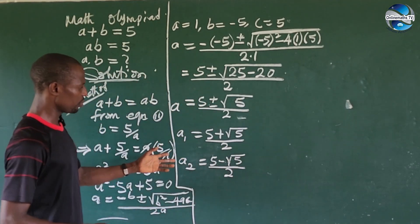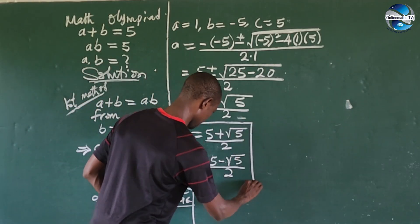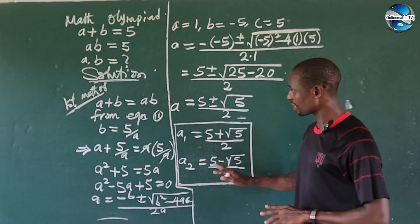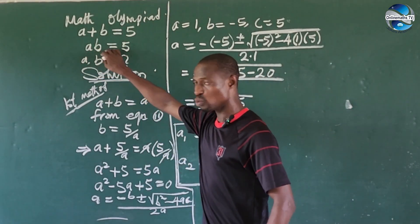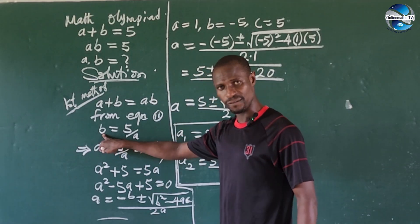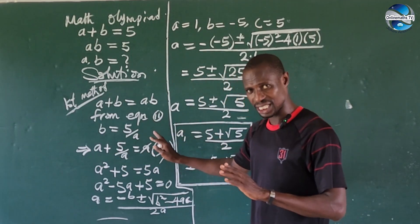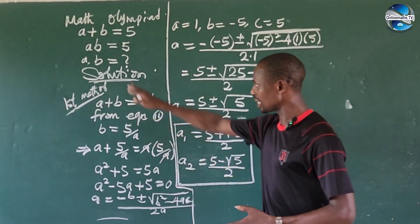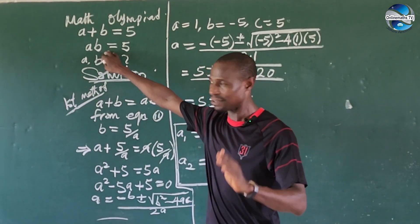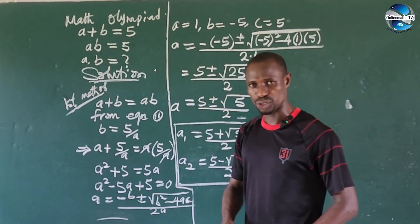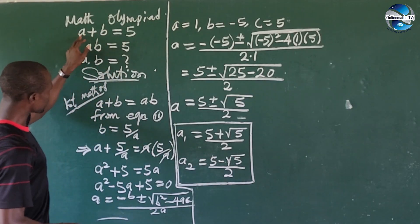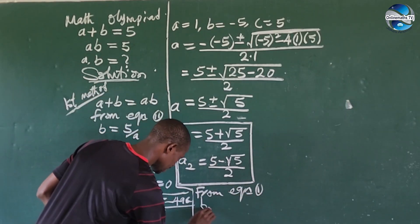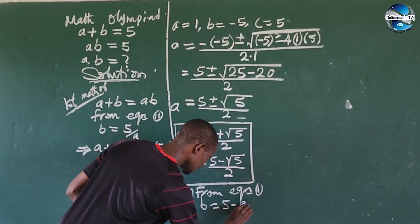Now we have two values for a. To find the corresponding values of b, we could substitute into equation two, but that would require rationalization. To save time, we use equation one instead. From equation one, making b the subject of the formula gives us b equals five minus a.